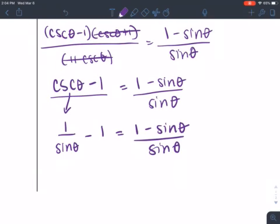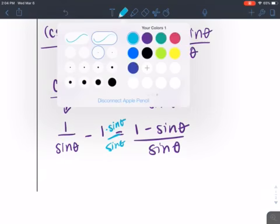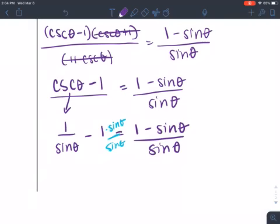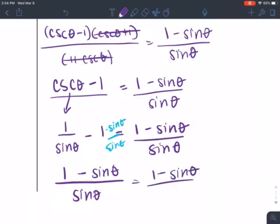Alright, let's get a common denominator. So I'm going to multiply by sine theta on the top and bottom. I get 1 minus sine theta over sine theta equals 1 minus sine theta over sine theta.